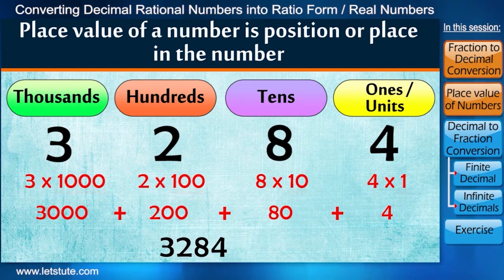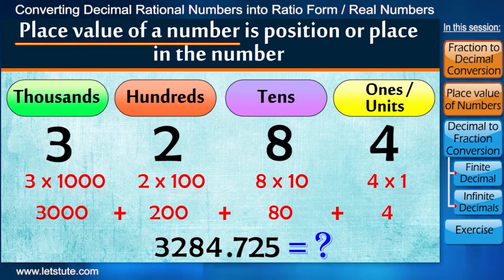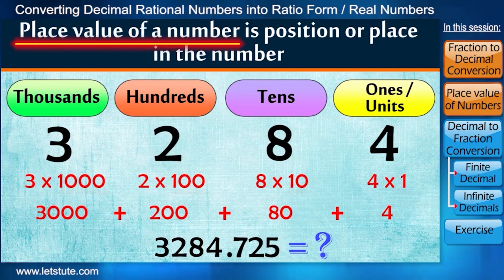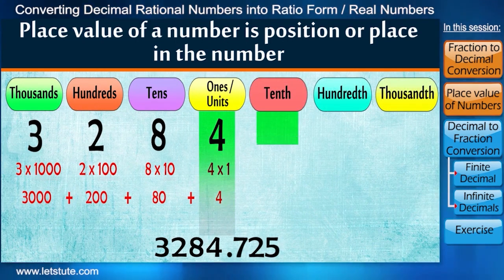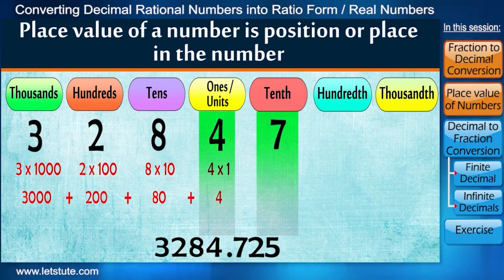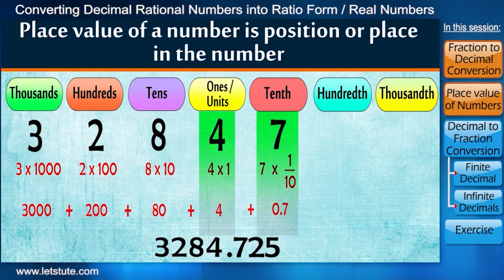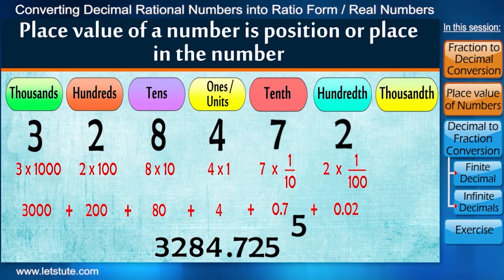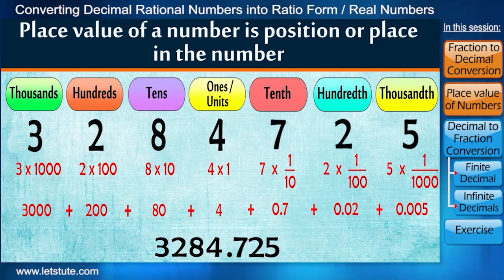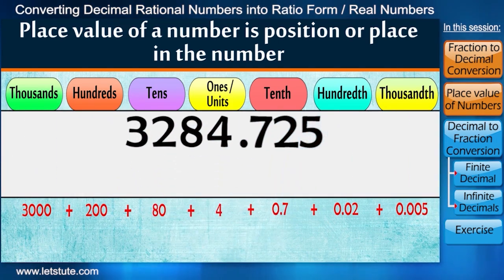But do decimal numbers also have place value? Yes, same will happen in this case too. If the place value of number 4 is 10 times bigger than the column to its right, then the digit 7 should have position 1 upon 10th. Same way the digit 2 holds position 1 upon 100th, then 1 upon 1000th and so on.